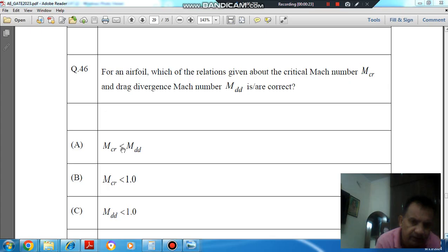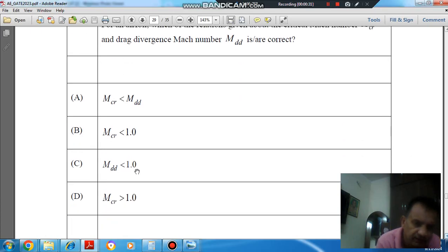Option A: MCR less than MDD. Option B: MCR less than 1.0. Option C: MDD less than 1.0. And option D: MCR less than 1.0.